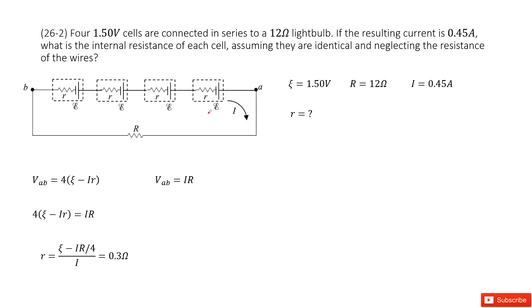There we look at four battery cells, right? And each one, the EMF is 1.5 volts. And then we know these four batteries are connected in series to a lightbulb. And the resistance for external resistor lightbulb is given as 12 ohms. And we know in this circuit, the current is 0.45 amps.